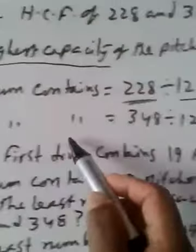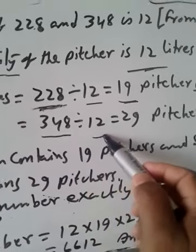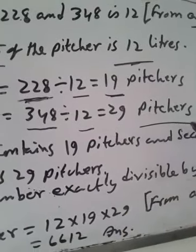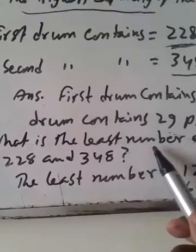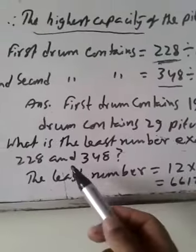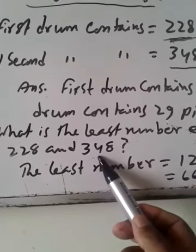And second drum contains 348 divided by 12, 29 pitchers. The C, question is C, what is the least number accurately divisible by 228 and 348.